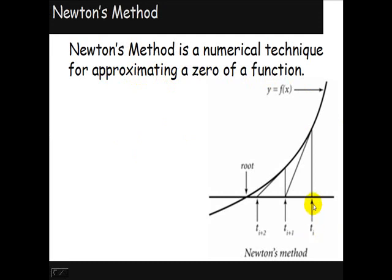It kind of works like this. We're trying to get to this zero down here. So we guess that it might be here and we go straight up to the curve. We get on the tangent line at that point and come back down to the x-axis, and that puts us closer to the zero or root we're looking for. And then we repeat the process.